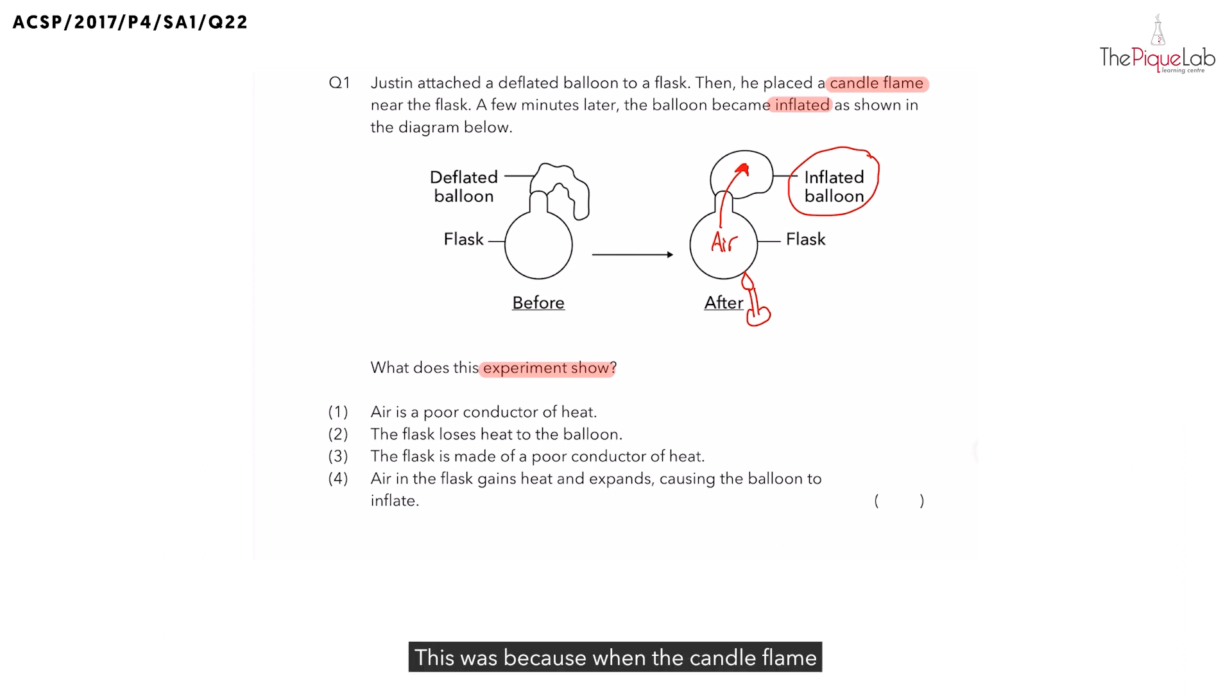This was because when the candle flame was placed below the flask, what do you think happened to the air? The air is going to gain heat from the flame. And as a result, when air gains heat, what happens to it? The air is going to expand. And when air expands, what happens to its volume? Its volume is going to increase.